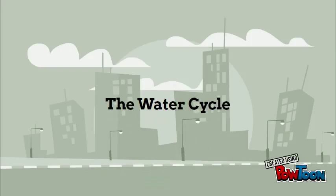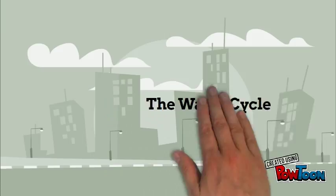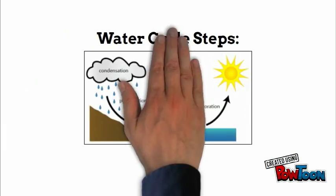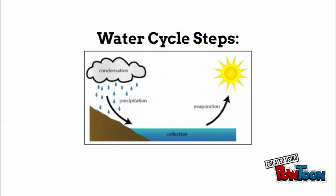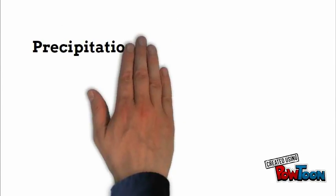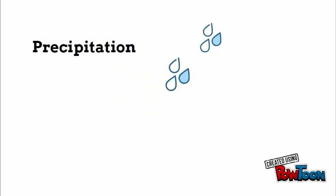In this presentation, we are going to be talking about the steps of the water cycle: precipitation, collection, evaporation, and condensation. Precipitation is when any form of water like rain, snow, sleet, or hail falls to the earth's surface.